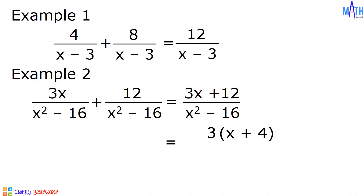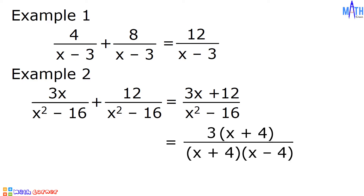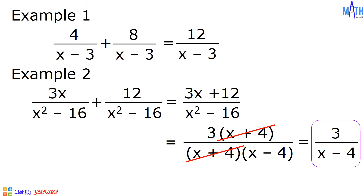In the denominator, x squared minus 16 is a difference of two squares. The square root of x squared is x and the square root of 16 is 4. So the factors of x squared minus 16 are x plus 4 and x minus 4. Next step, let us cancel out the common factor x plus 4, and we are left with 3 over x minus 4. And this is the final answer.